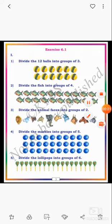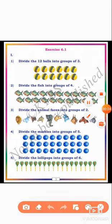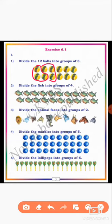Dear students, divide the 12 balls into groups of 3. There are 12 balls here, and you can group them with each group having 3 balls. First group, 3 balls; second group; third group and fourth group. How many groups are there? There are 4 groups. The 12 balls are divided equally into 4 groups, each group having 3 balls.